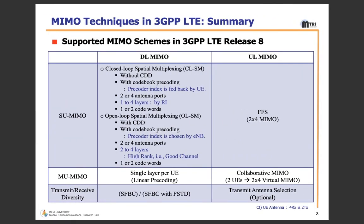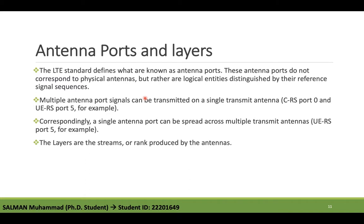In Closed-Loop Spatial Multiplexing, the precoder matrix index is fed back by the UE, since the PMI is sent from UE to base station. In Open-Loop Spatial Multiplexing, there is no feedback from UE to base station, so the precoder index is chosen by the base station itself.